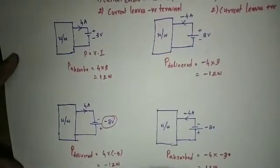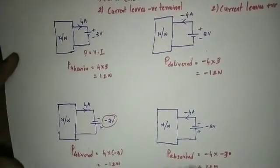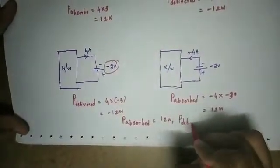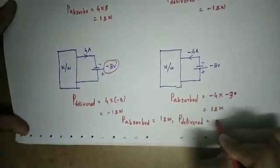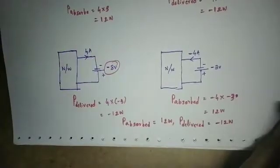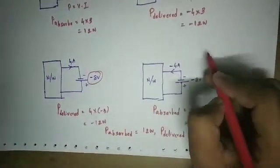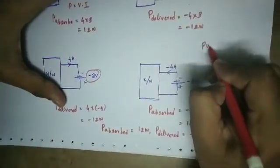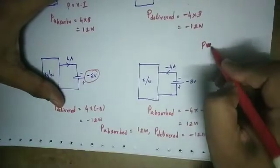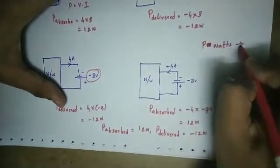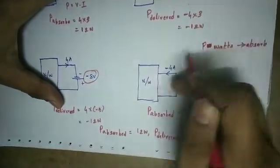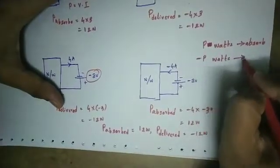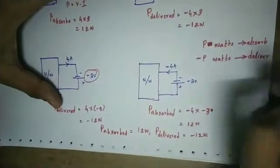Power absorbed is equal to 12 watts. Power delivered is equal to minus 12 watts. The source absorbs p watts of power, and if p watts is absorbed, then minus p watts is delivered. These are the 4 examples.